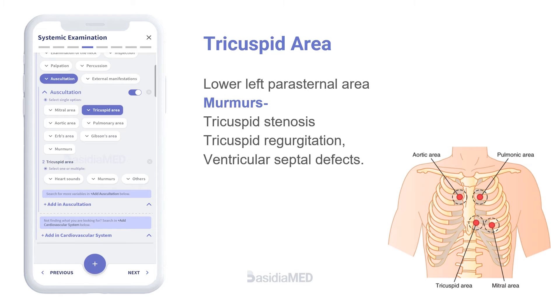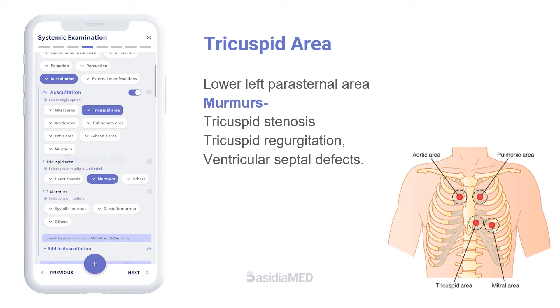The tricuspid area corresponds to the lower left parasternal area. Murmurs noted here are suggestive of tricuspid stenosis, tricuspid regurgitation, and ventricular septal defects.